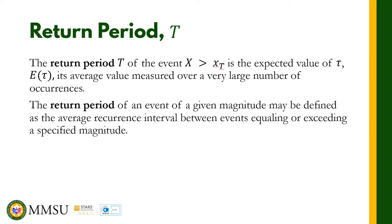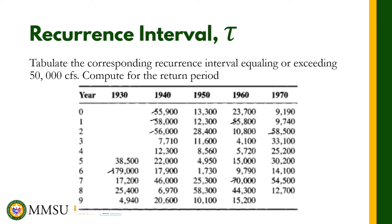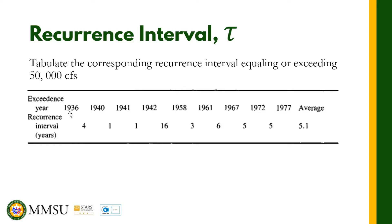Let us take a look at an example on recurrence interval and return period. Our extreme event here is 50,000 cubic feet per second. Looking at the table, we identify values that are equaling or exceeding 50,000 cfs. We then tabulate the years in which these occur: 1936, 1940, 1941, 1942, 1958, 1961, 1967, 1972, and 1977.